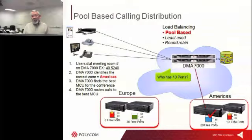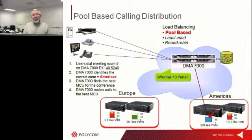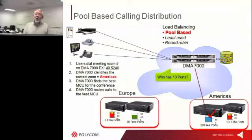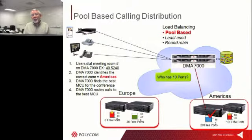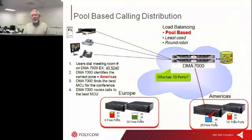That pool requirement could be a geographic requirement. For example, if we had a bunch of people in Europe attending a call, it would seem wasteful of bandwidth to have them call into the U.S. It would be better for them to call a centralized bridge, possibly in Europe, and then do a cascaded call — a single call back into the U.S. Those are things that DMA can set up and help you do.